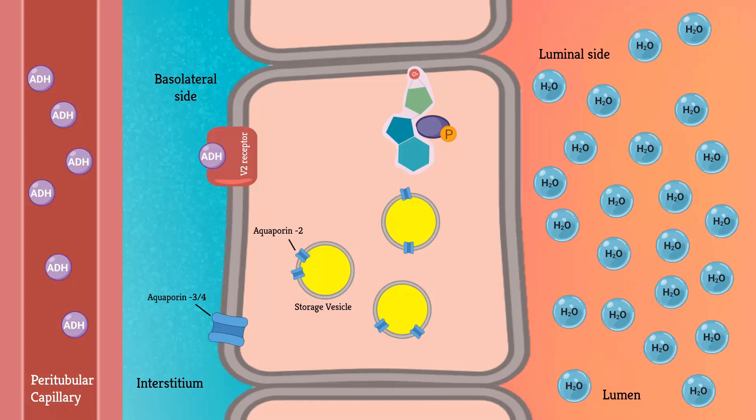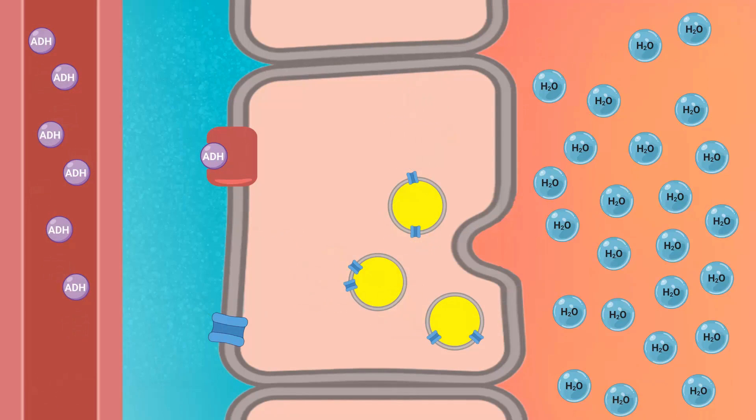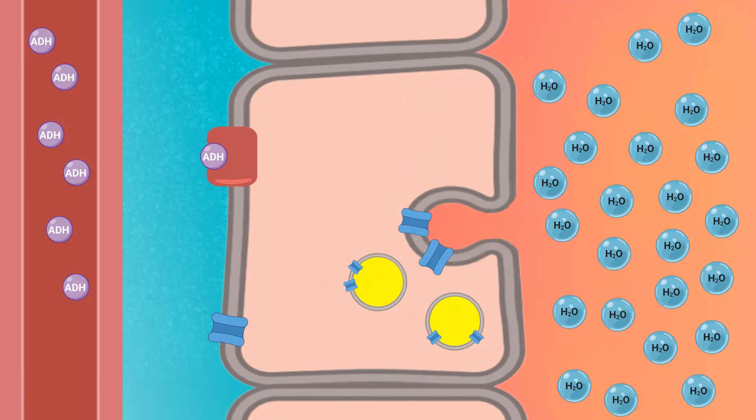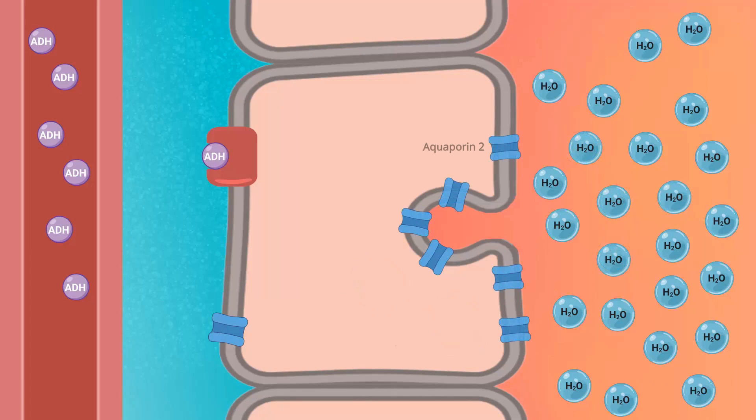Activated protein kinase A stimulates the movement of storage vesicles along with the intracellular protein named aquaporin 2 (AQP2) to the luminal side of the cell membranes. These molecules of aquaporin 2 fuse with the cell membrane by exocytosis to form water channels that permit rapid diffusion of water through the cells.